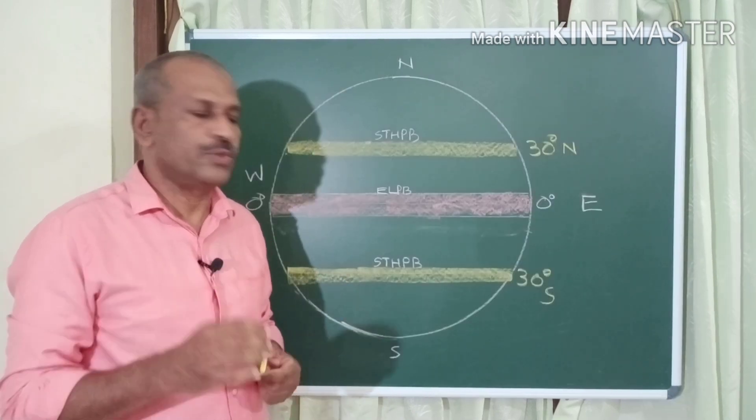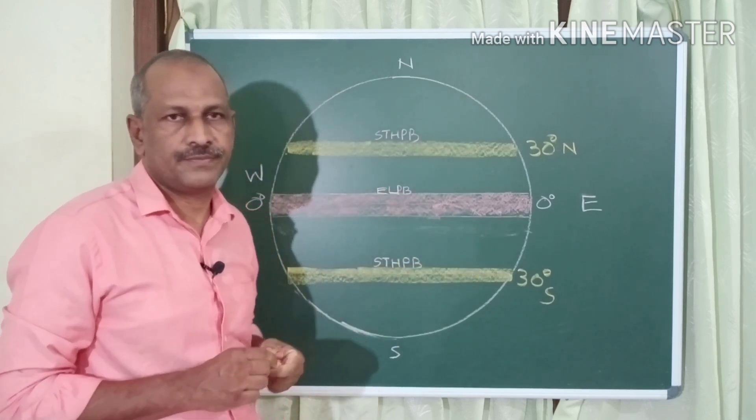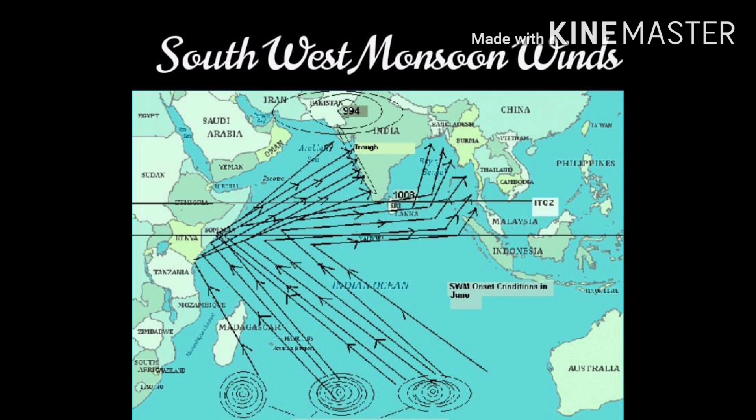Monsoon winds can be classified into two: southwest monsoon winds and northeast monsoon winds. Look at the figure where southwest monsoon winds are illustrated. During summer, high pressure is formed over the Indian Ocean. From that high pressure, wind blows from southeast to northwest, and crossing the equator that wind deflects to its right due to the Coriolis force, blowing from the southwest direction — that wind is called the southwest monsoon wind.